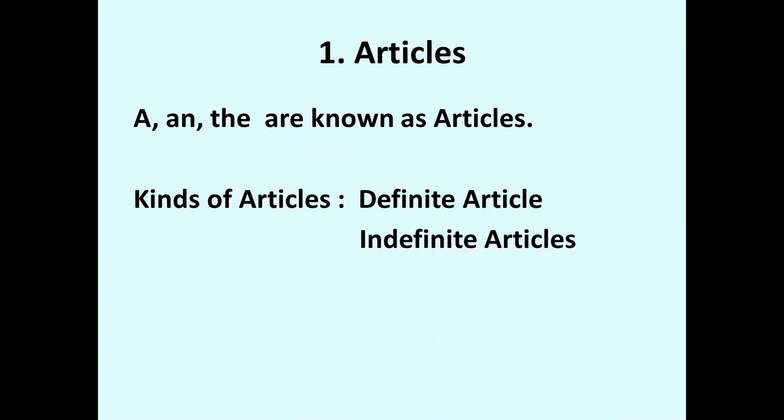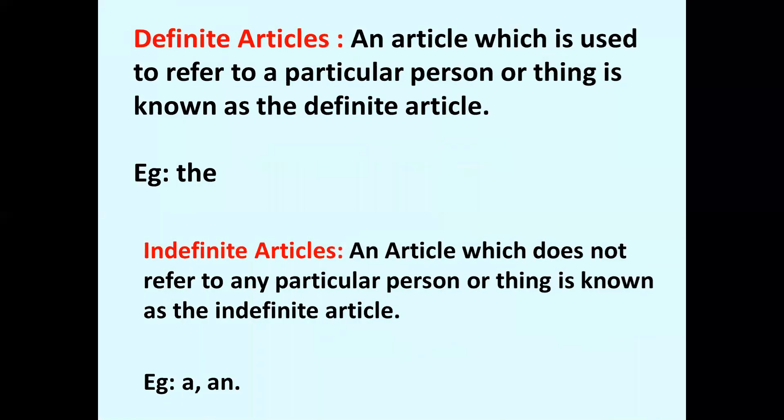What do you mean by articles? A and the are known as articles. There are two types of articles: definite article and indefinite articles. An article which is used to refer to a particular person or thing is known as the definite article, so we use definite articles as 'the'. An article which does not refer to any particular person or thing is known as the indefinite article.